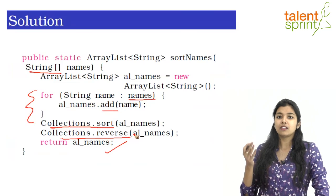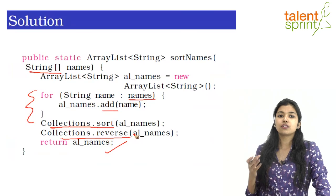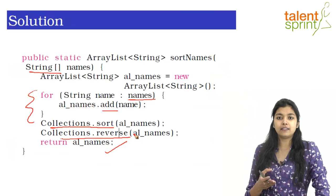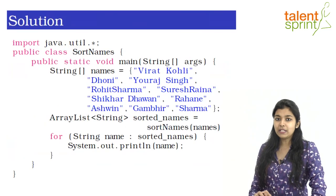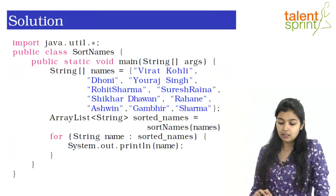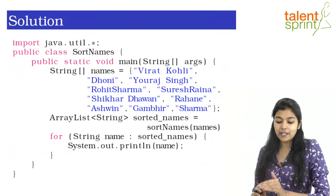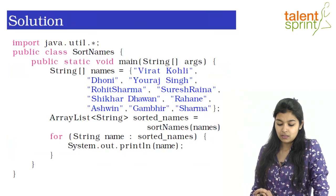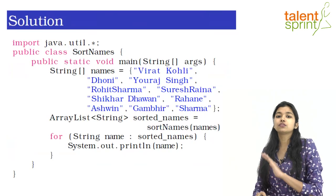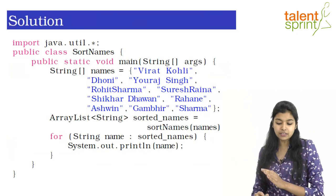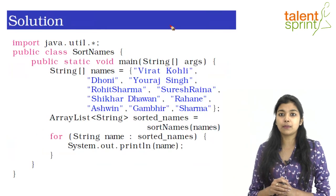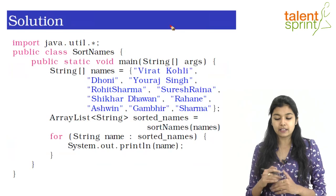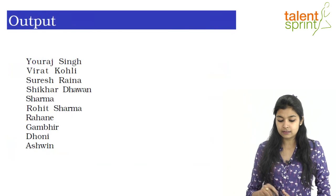Using the existing functions of Collections to sort your string array and then print it out is very straightforward. In the main function, as you can see, we have created a string array of cricketer names that are not sorted. We pass this string array to our function, and once we get the sorted list back, we traverse through it in a for loop and print it out.